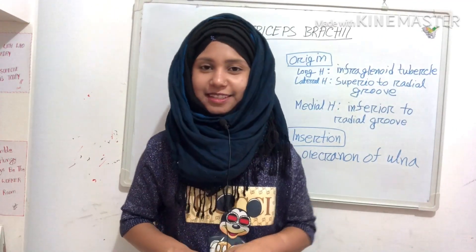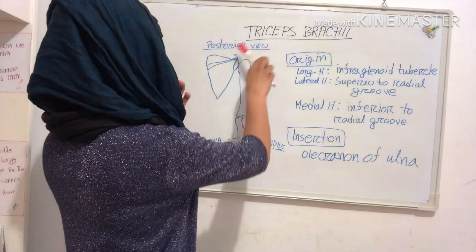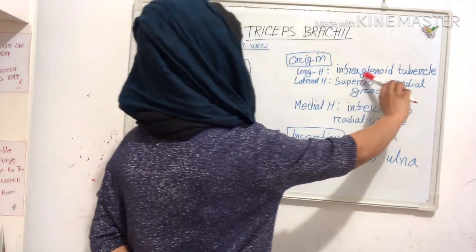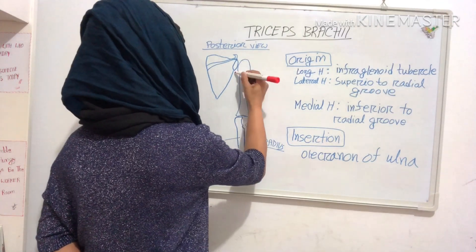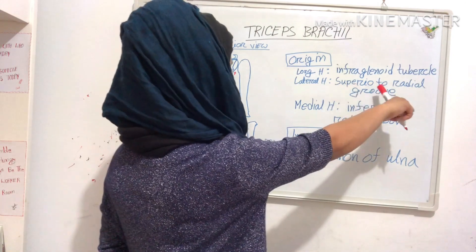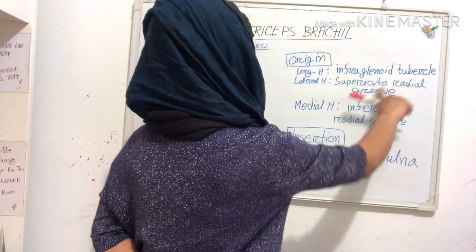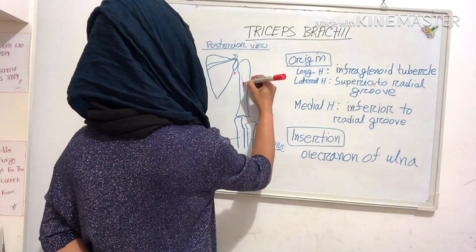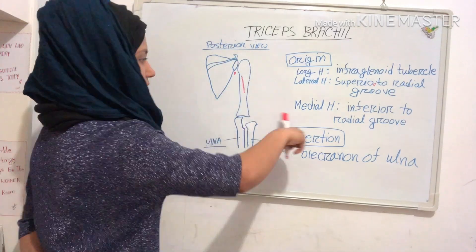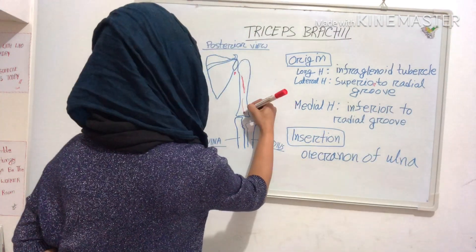Now finally we will see our last muscle, triceps brachii. Triceps brachii has three heads. The long head originates from the infraglenoid tubercle — this is the infraglenoid tubercle. The lateral head originates from the posterior humerus superior to the radial groove. The medial head originates from the posterior humerus inferior to the radial groove.